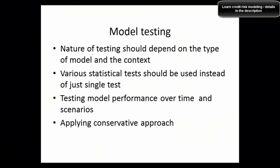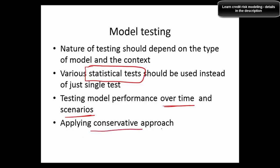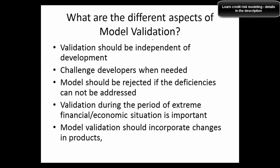What are the guidelines for model testing? The nature of testing depends on the type of model and context. Multiple statistical tests should be used instead of just a single one. Testing model performance over time and across scenarios is important — including out-of-time and out-of-sample validation. Applying a conservative approach is also important when evaluating model performance.